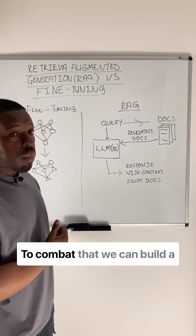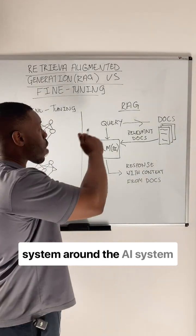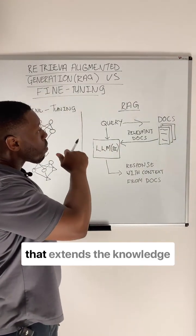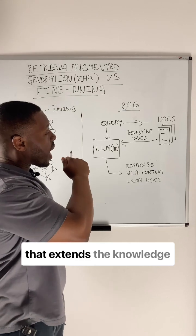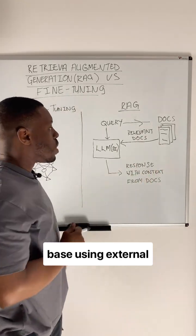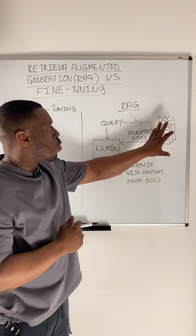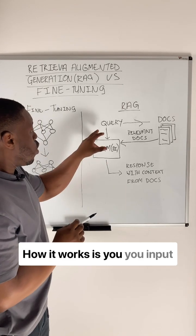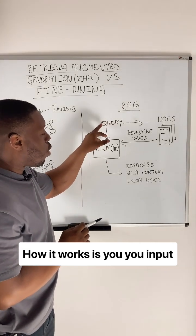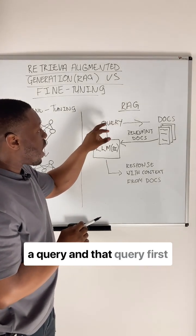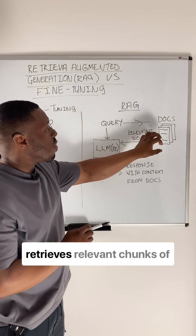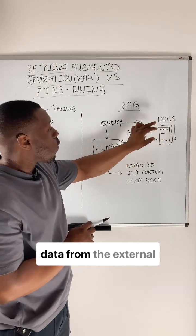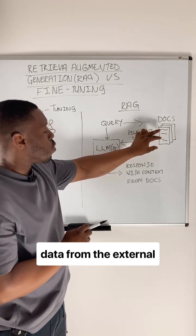To combat that, we can build a system around the AI system that extends the knowledge base using external documents. How it works is: you input a query, and that query first retrieves relevant chunks of data from the external documents.